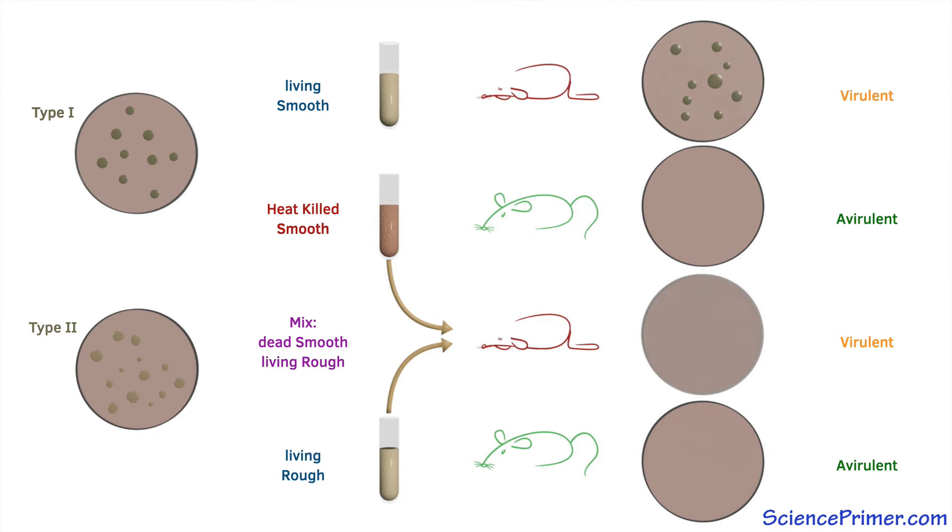And surprisingly, the bacteria that were isolated from the infected mice matched the heat-killed virulent strain, both in that the colonies were smooth, and the disease-causing cells matched the slide agglutination type of the dead culture, meaning something in the heat-killed cell debris from the virulent strain was able to transform the avirulent type 2 strain into the virulent type 1 strain.